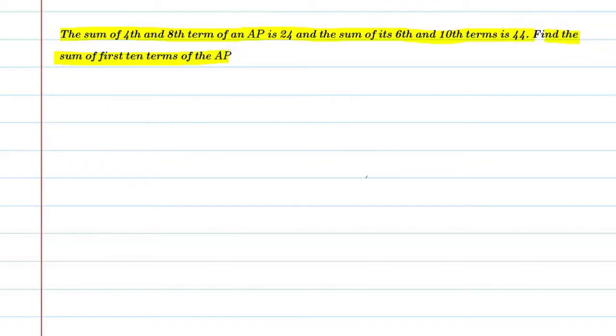Alright, so let's start this question. First of all, we will write the given. Here we can say sum of 4th and 8th term. So, 4th term means A4 and 8th term is A8 is equal to 24 and say this is equation number 1. Second thing is A6 plus A10 is equal to 44.